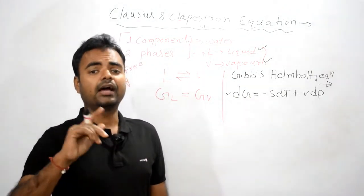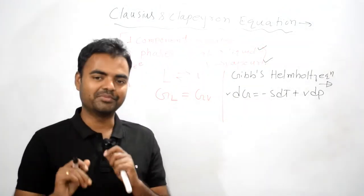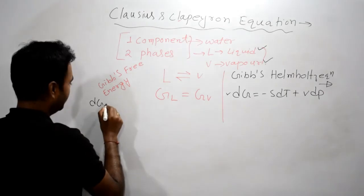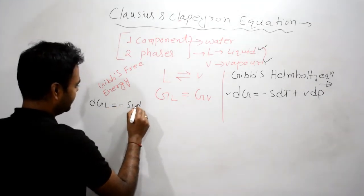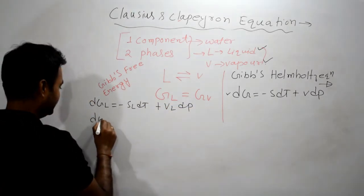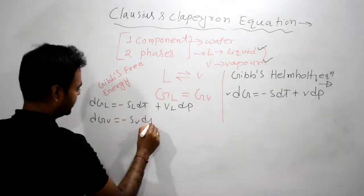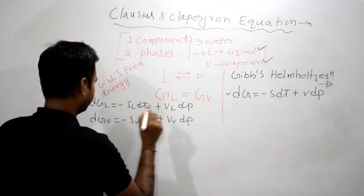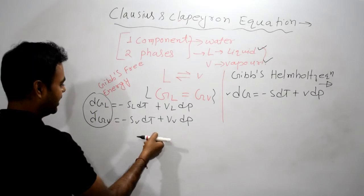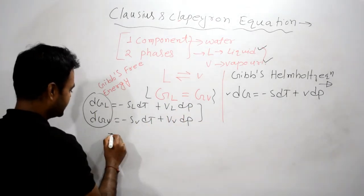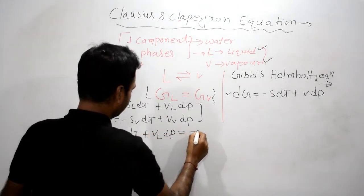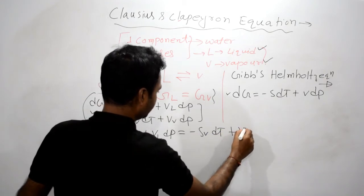So what we can write is dGL equals minus SL dT plus VL dP, and dGV equals minus SV dT plus VV dP.